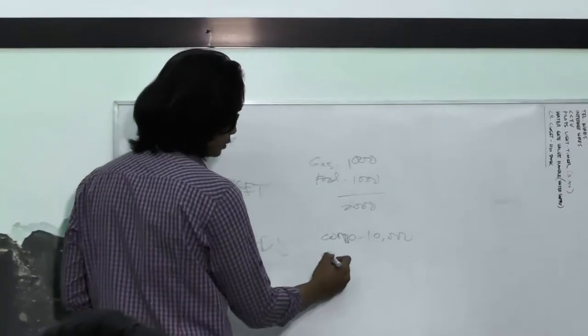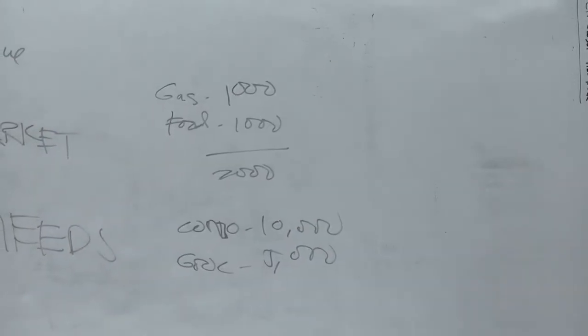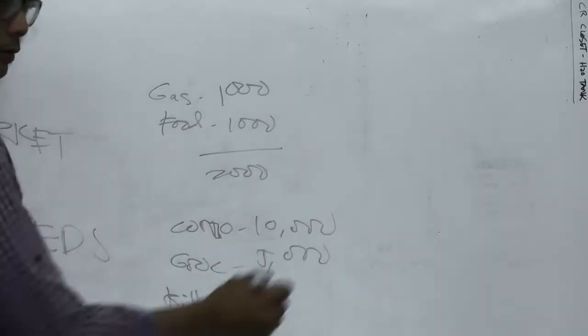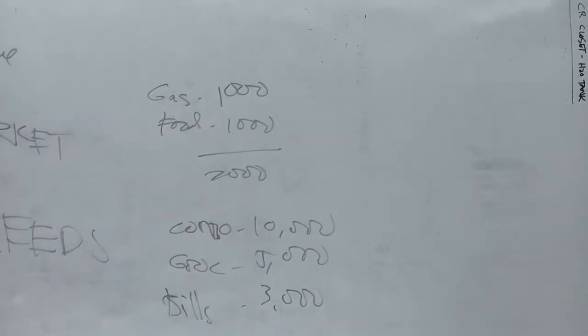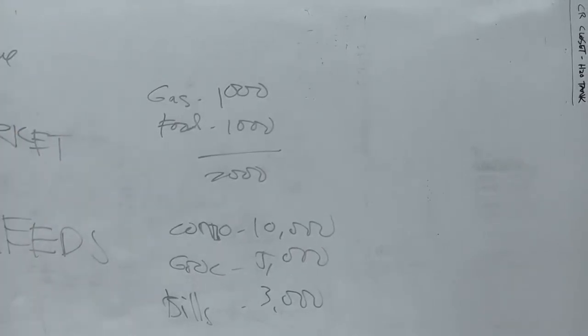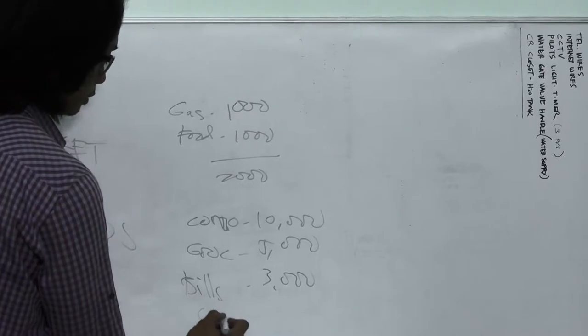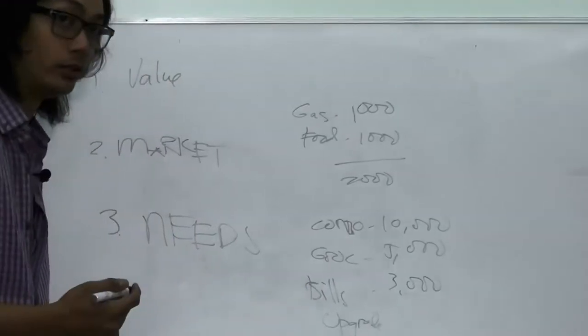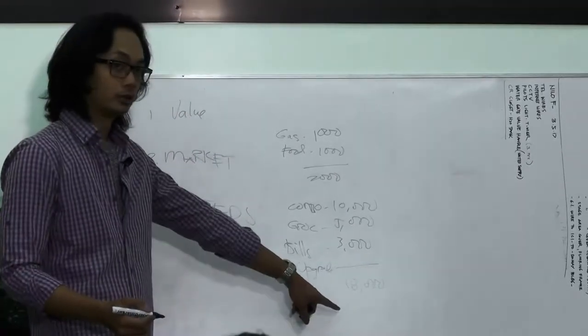Groceries. Groceries, how much? 4,500. So, sabihin natin, 5,000. Bills, okay. How much? 3,000. Siguro, it's a toys. Toys? Mga toys, so, pag na-upgrade ka, or, okay, sige, so, morang upgrades. Pero, ito, we won't consider this yet. Yet, ito muna, basic needs. So, basically, you are spending 18,000, 18,000, a month.